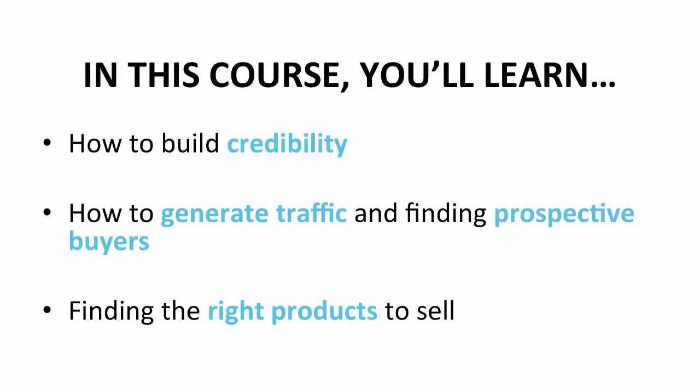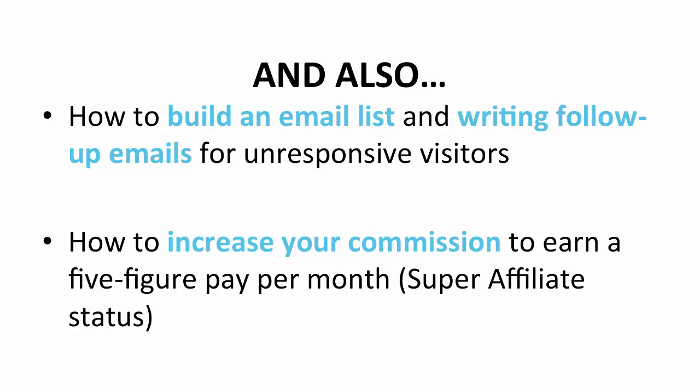For purchasing the Affiliate Payout Machine, you will know how to avoid ending up like unsuccessful affiliate novices. In this course, you will learn how to build credibility to win the trust of your prospective subscribers, how to generate traffic and find prospective buyers to boost your sales, and find the right products to sell — products that are able to make a high number of sales and also provide a high commission rate. How to build an email list, which is a vital part in building an affiliate business. Also, writing follow-up emails to be sent to those in the email list.